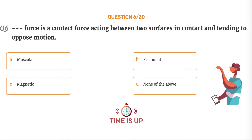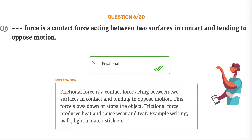The correct answer is Option B: Frictional. Frictional force is a contact force acting between two surfaces in contact and tending to oppose motion. This force slows down or stops the object. Frictional force produces heat and causes wear and tear. Example: writing, walking, lighting a matchstick, etc.